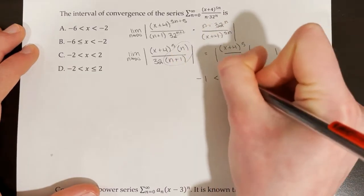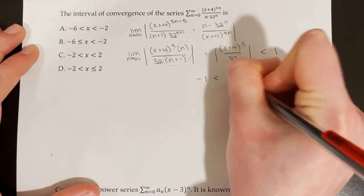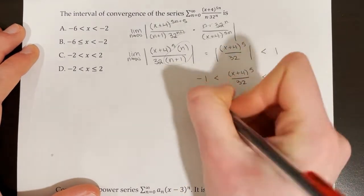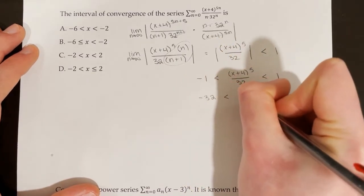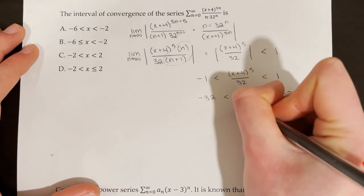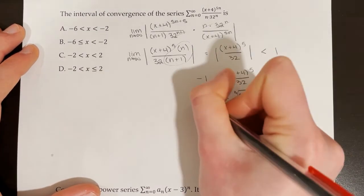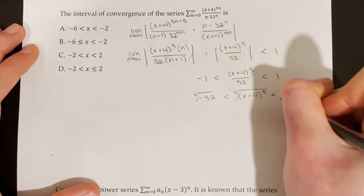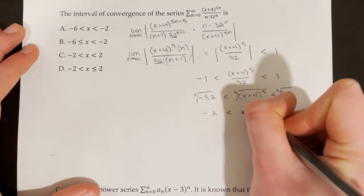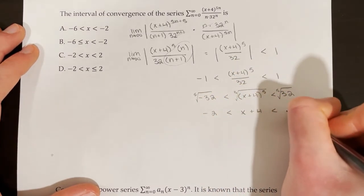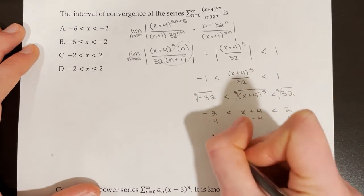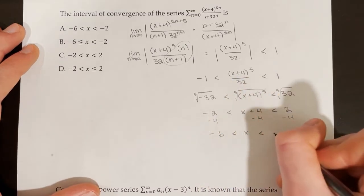To solve this inequality, we write: negative 1 is less than x plus 4 to the power of 5 over 32 is less than positive 1. Multiplying everything by 32: negative 32 is less than x plus 4 to the power of 5 is less than positive 32. Then taking the fifth root of all sides: the fifth root of negative 32 is negative 2, so we have negative 2 is less than x plus 4 is less than positive 2. Subtracting 4 from each part gives negative 6 is less than x is less than negative 2.